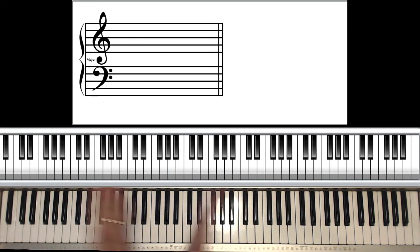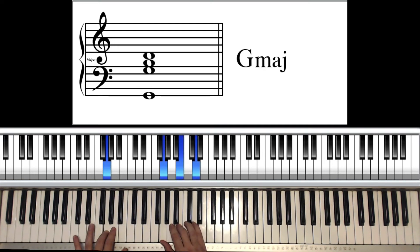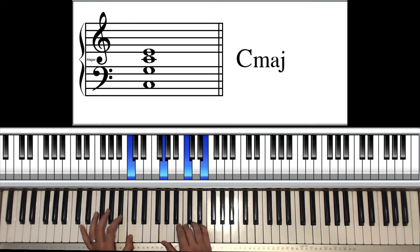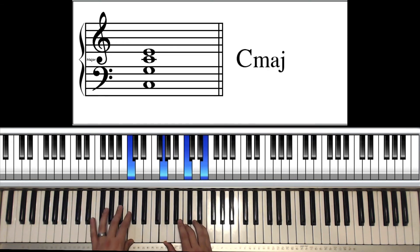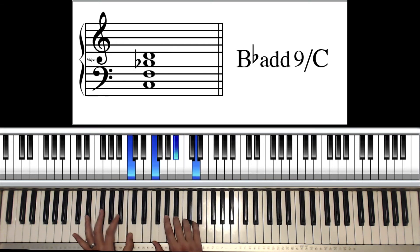So the very first chorus is in C. Ch-ch-ch-chip and dance. C major. Rescue Rangers. Bb over C. Ch-ch-ch-chip and dance. And it goes back to C. Where there's danger. Bb over C.